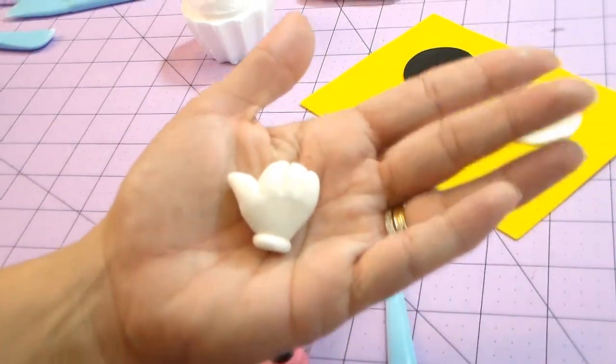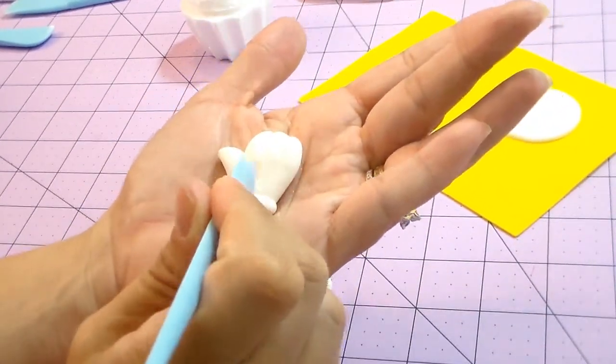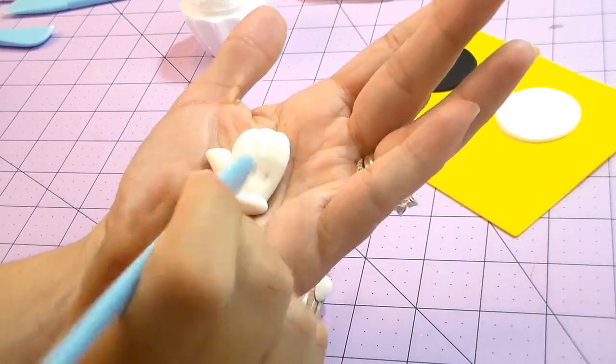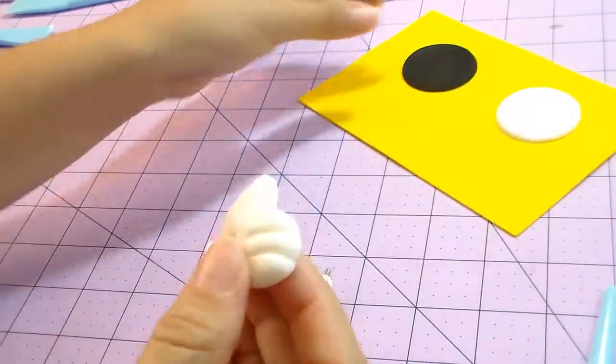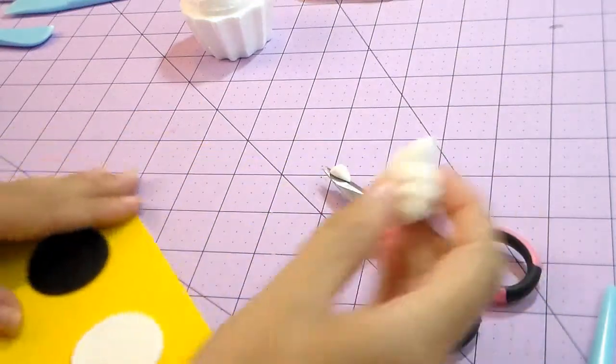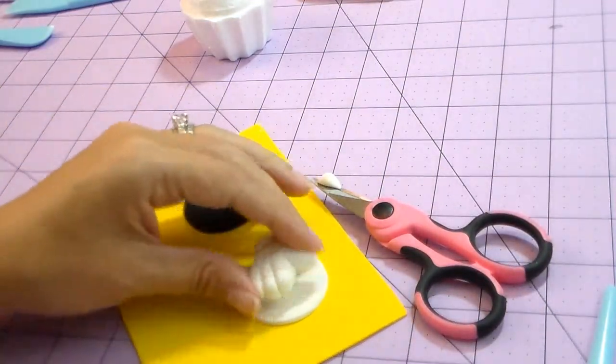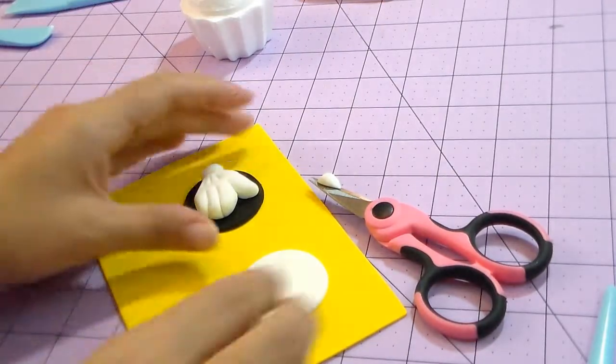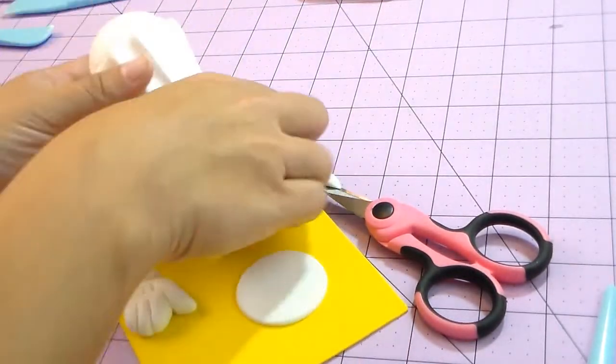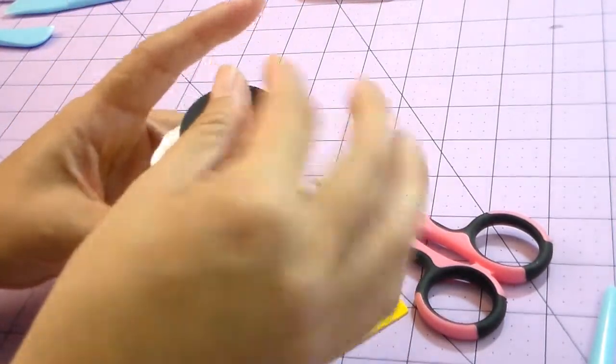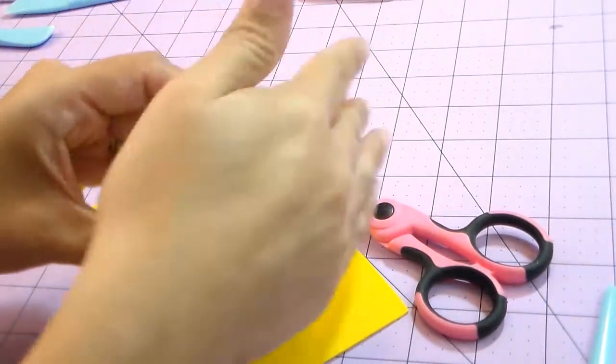This is an easy cupcake topper to make. I'm just marking the little glove marks that he has for the charm of it. You can put it on a cupcake straight, or you can put it on the white or on the black. I would use the black for this color since the glove is already white.